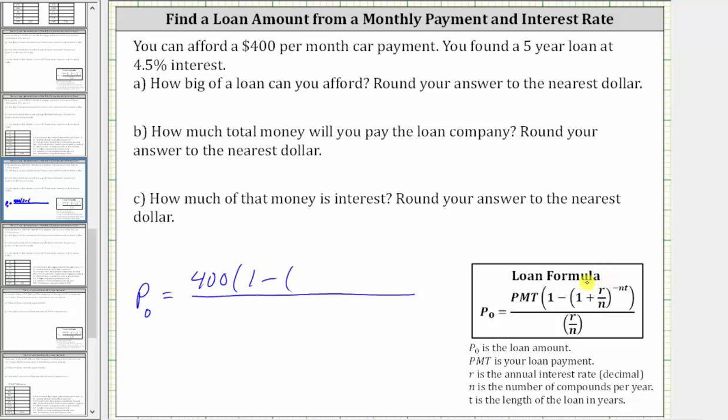where R is the annual interest rate as a decimal. The rate is 4.5%, which as a decimal is 0.045. So we have one plus 0.045 divided by N, where N is the number of compounds per year, which if not given, we use number of payments per year. Because you'll be paying $400 per month, and there are 12 months a year, N is 12.